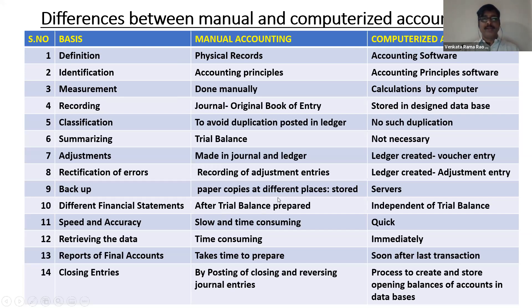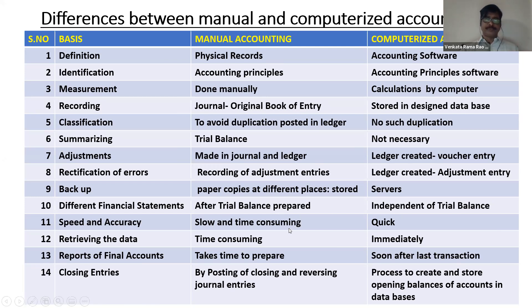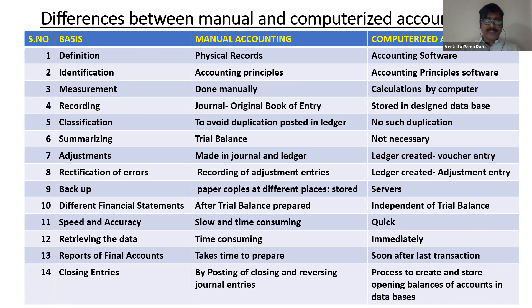For closing entries, in manual accounting you have to post reverse journal entries — for example, showing opening stock for the next year. In computerized accounting this process is simplified. These are the major differences between manual accounting and computerized accounting. Remember that whatever software we discussed helps bridge these differences, and you can also refer to your textbook for more detailed explanations of each accounting software.